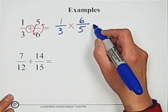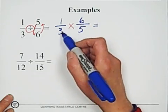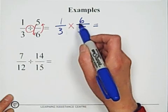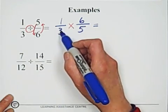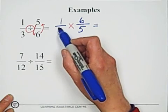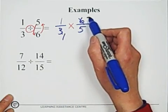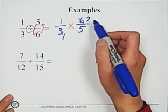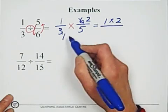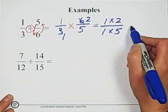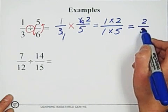Then reduce if there are common factors between numerator and denominator. Three and six can be simplified by dividing by three — get one and two. Then multiply the numerators and multiply the denominators. We got two over five.